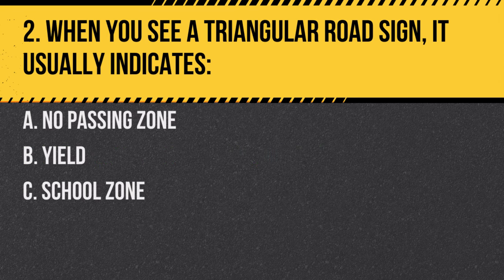Question 2. When you see a triangular road sign, it usually indicates: a. No passing zone. b. Yield. c. School zone. Answer: b. Yield. Triangular signs are commonly used to indicate yield.